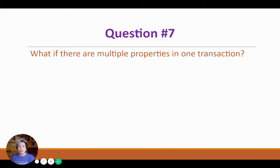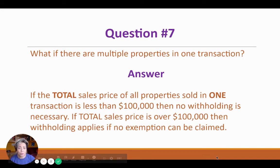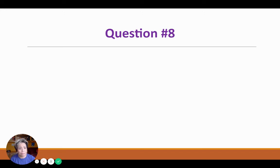Question number seven: What if there are multiple properties in one transaction? If the total sales price of all the properties sold in that one transaction is less than $100,000, then no withholding is going to be necessary. If the total sales price is over $100,000, then withholding will apply if no exemption can be claimed.